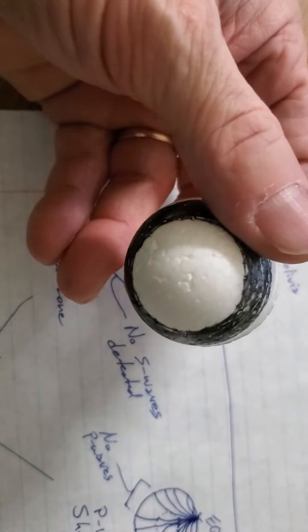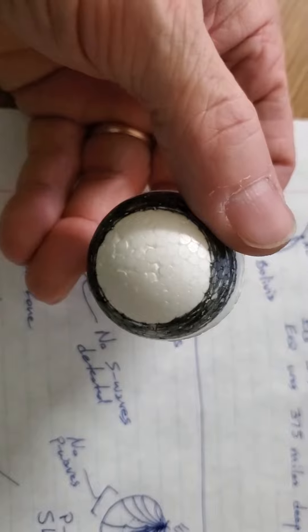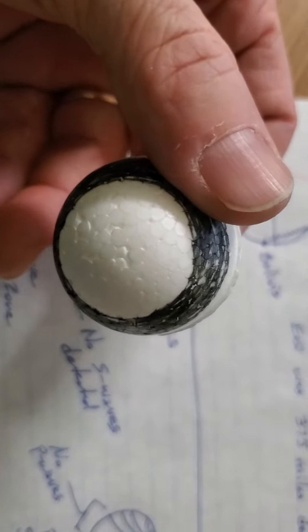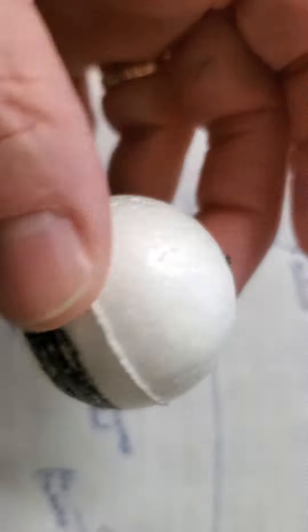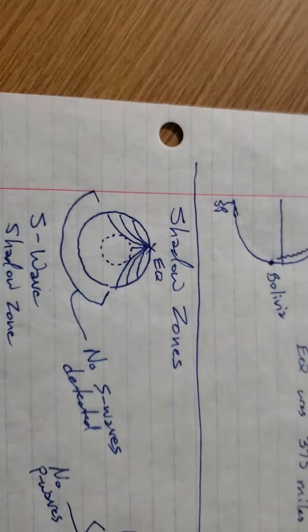And there in the center is the earthquake's antipode. The opposite spot on the world is called an antipode. Every place on the Earth has an antipode. It's the spot on the other side. Okay? So, thank you.